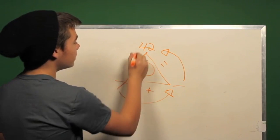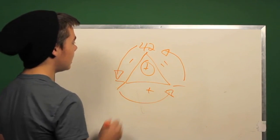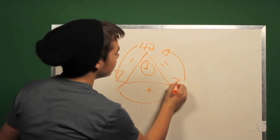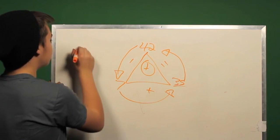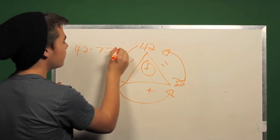Or we can do 42 minus 7 to equal our blank. So we know that 42 minus 7 is 35. So this means that 42 minus 7 equals 35.